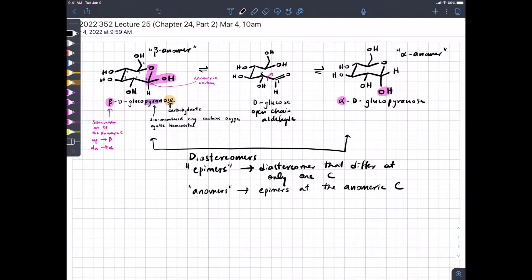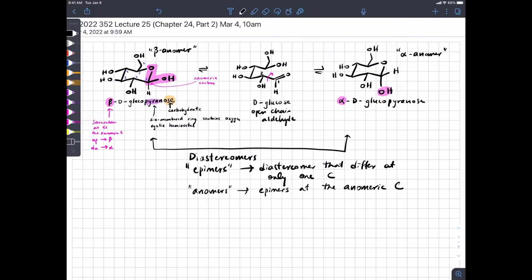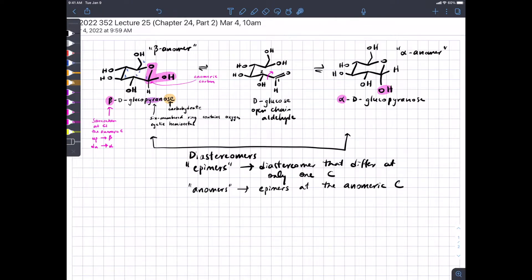How do you know what to memorize versus what to not? I will tell you. So, you will need to know that this structure is beta-D-glucopyranose and that this structure is alpha-D-glucopyranose. And you will need to know how they are different from just D-glucose.